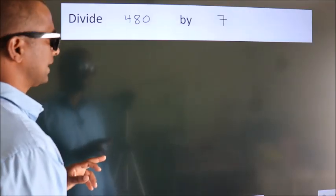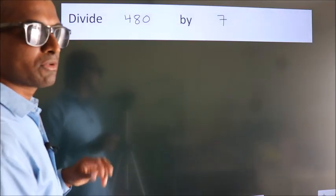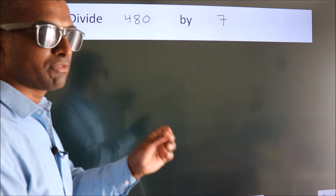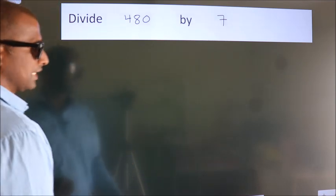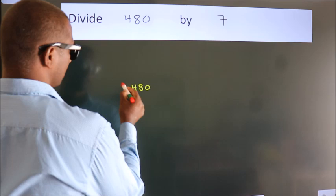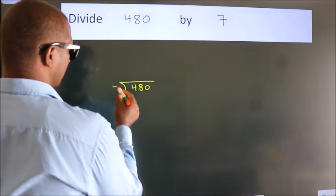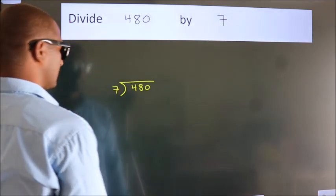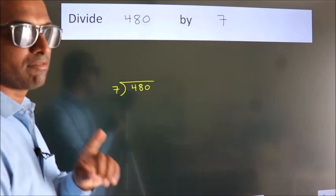Divide 480 by 7. To do this division, we should frame it in this way: 480 here, 7 here. This is your step 1.